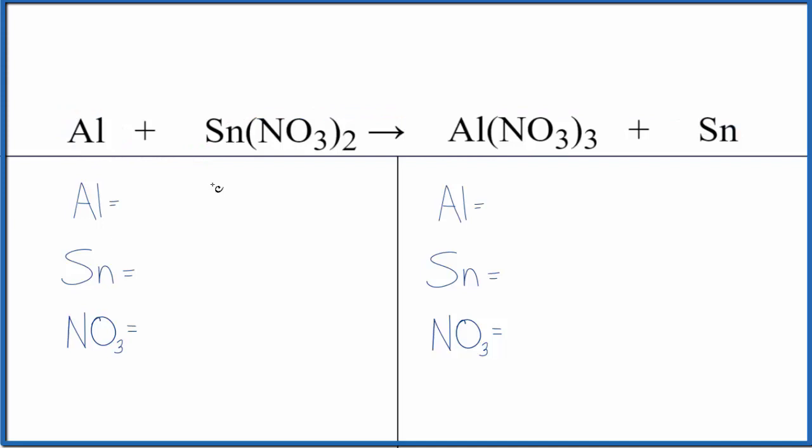We're going to use a trick here to make it a little bit easier. We have one aluminum and one tin, but then this NO3, this is the nitrate ion. We have it here and again on the other side. It stays together. It's a polyatomic ion. So we're going to count that as one thing. I have my one nitrate ion times two, so I have two of those here.